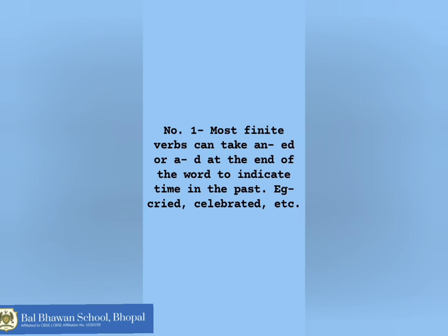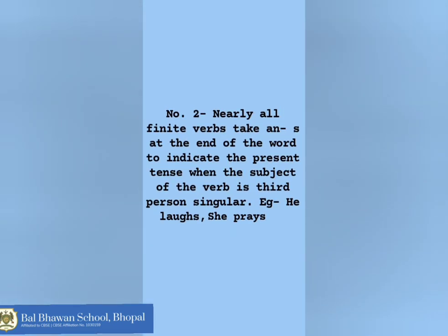About a hundred or so finite verbs actually do not have these endings because they are irregular verbs. Number two: nearly all finite verbs take an -s at the end of the word to indicate the present form when the subject of the verb is third-person singular. For example: he laughs, she prays.